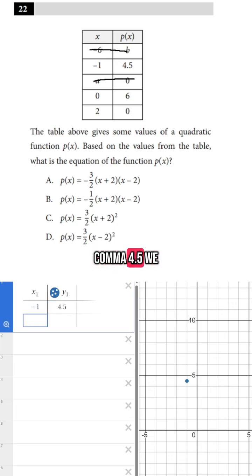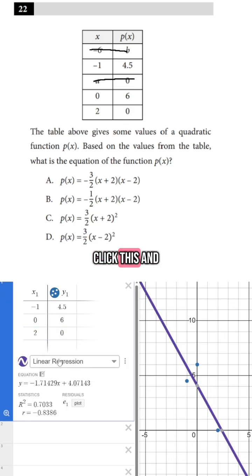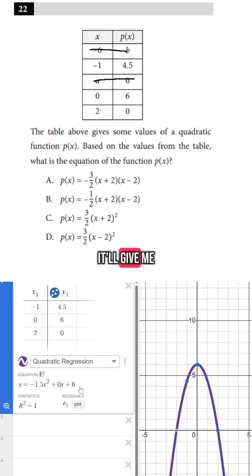Negative 1, 4.5, we have 0, 6, and then we have 2, 0. And then if I click this, and then I click quadratic regression, it'll give me my equation.